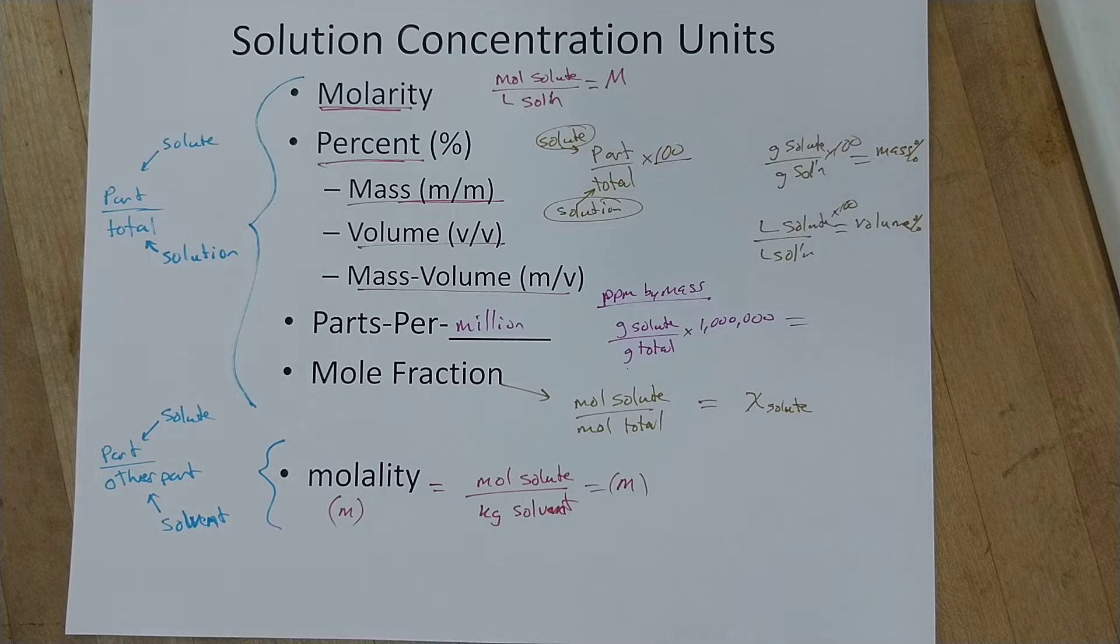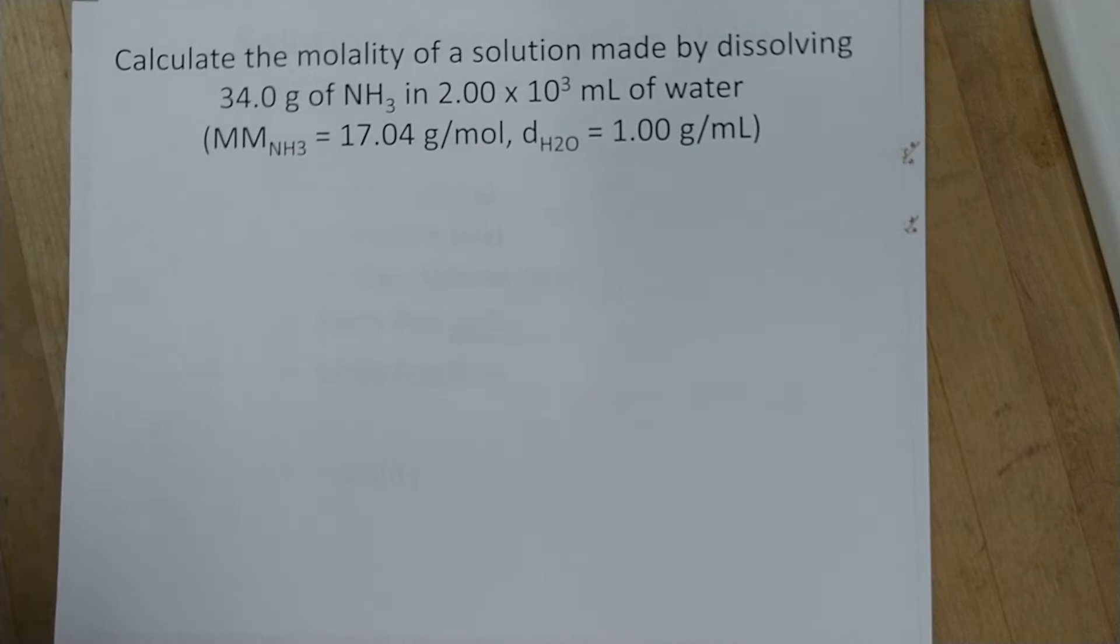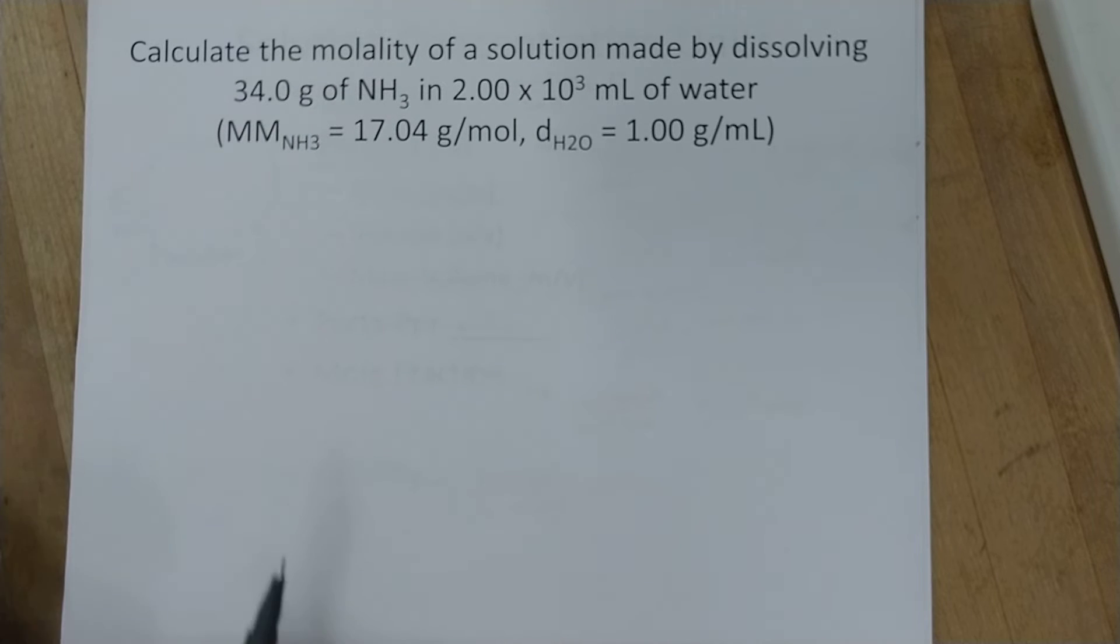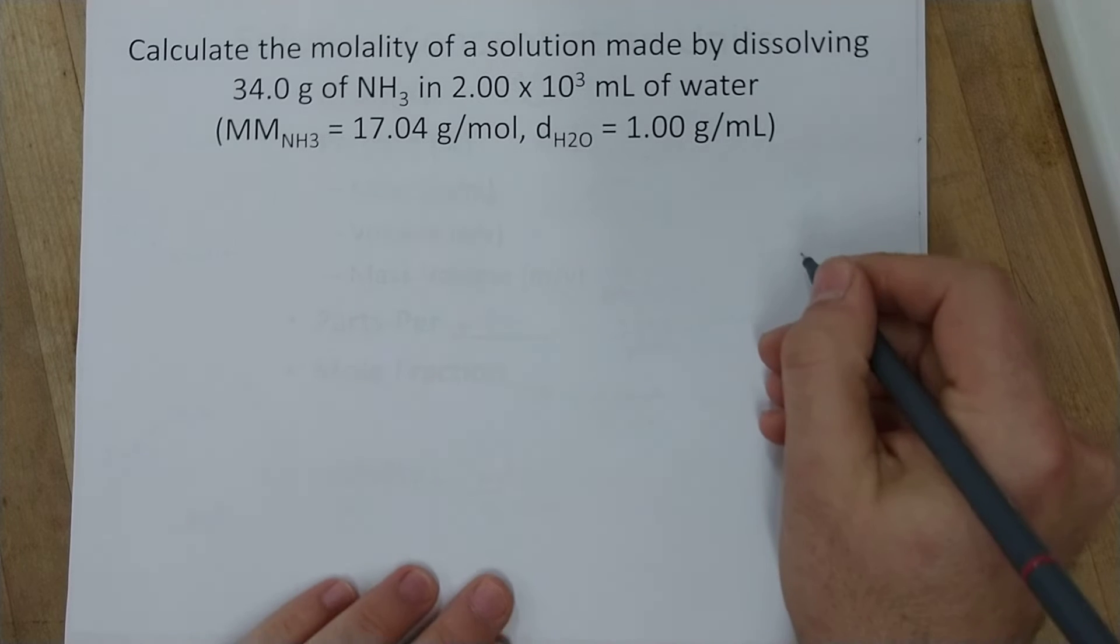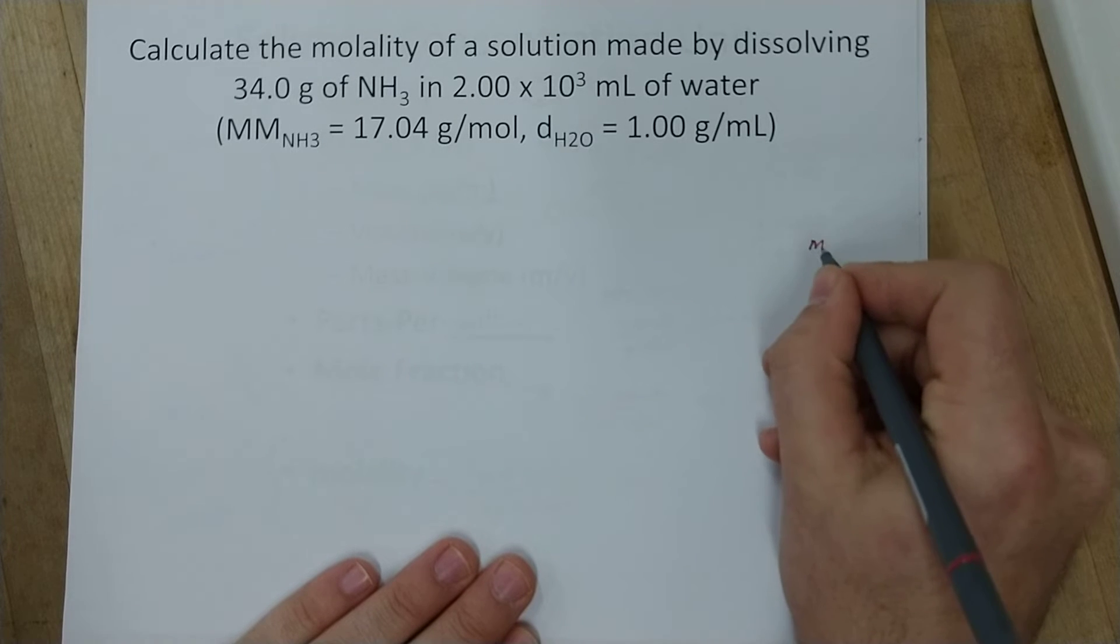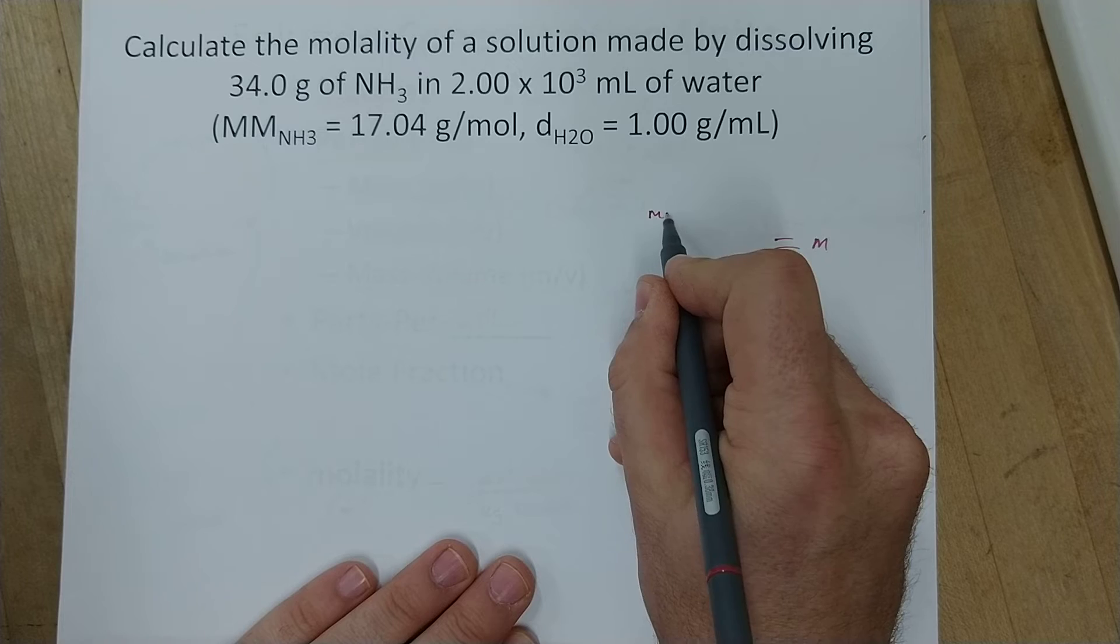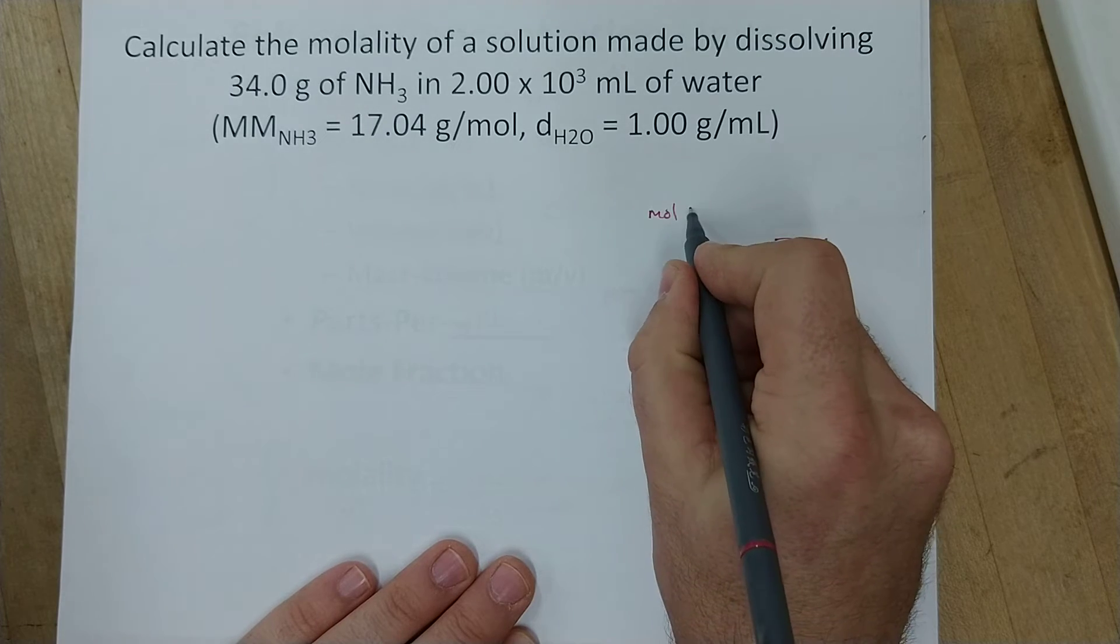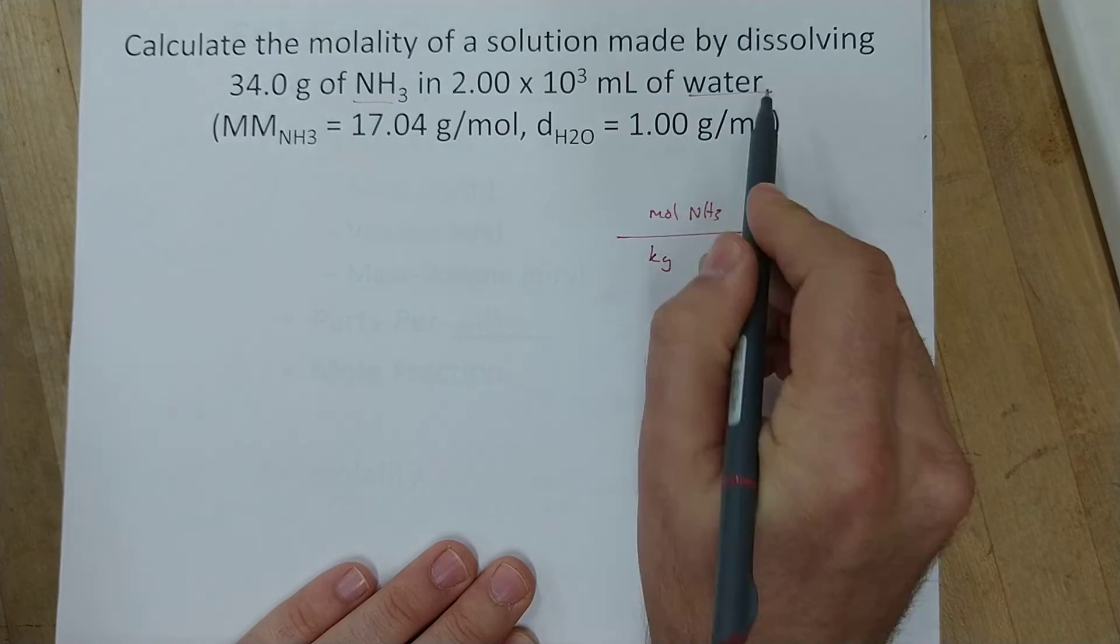So I can tell you that definition but actually doing it can be another difficulty altogether. So let's go ahead and actually practice calculating a molality. Calculate the molality of a solution made by dissolving 34 grams of ammonia in 2.00 times 10 to the third milliliters of water. And they've given you some molar mass of ammonia and the density of water. Remember molality is the moles of the solute, so that's the thing dissolving, NH3 in this case, divided by the kilograms of the solvent, which is water in this case.